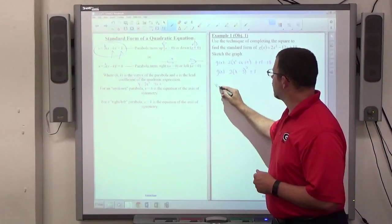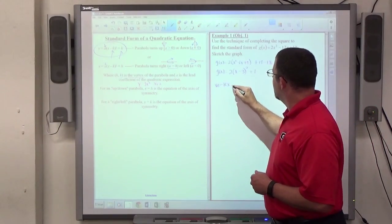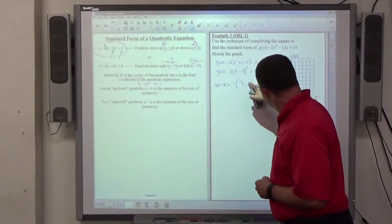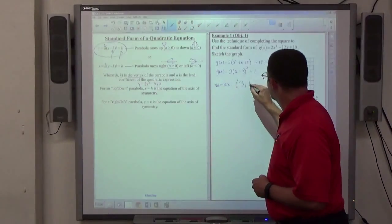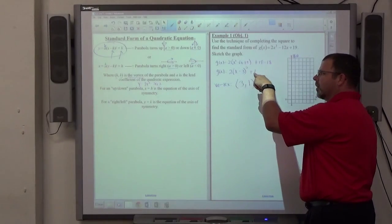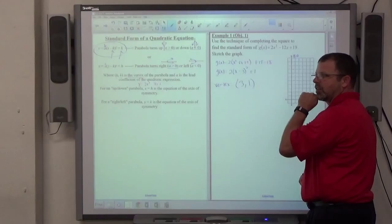So the vertex of this parabola is going to be positive 3, positive 1. Minus h, so change the sign of the thing inside the parentheses, comma k, take the sign of this outside the parentheses.